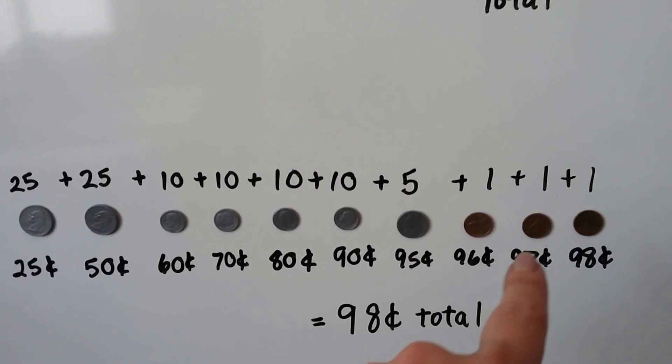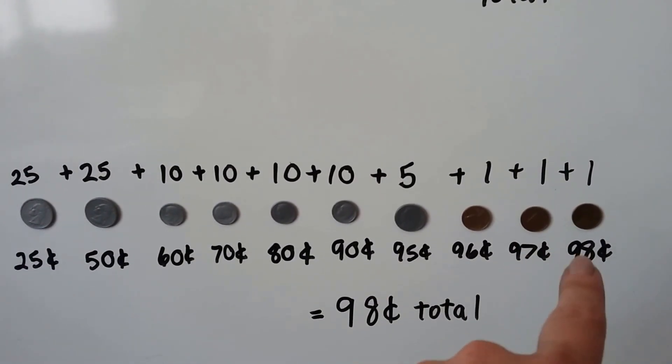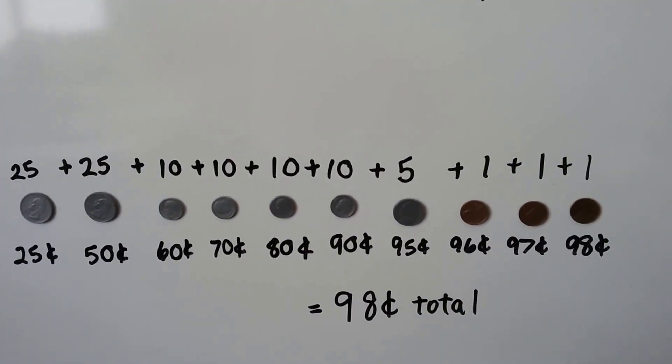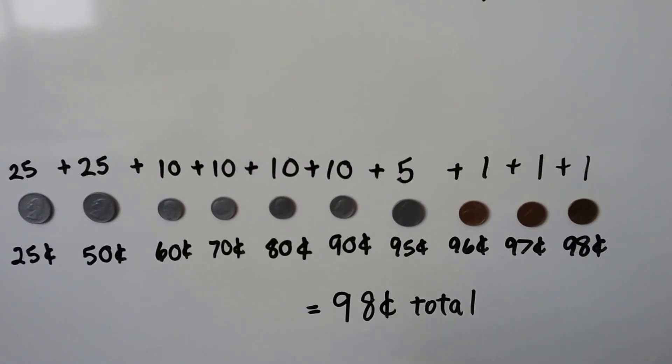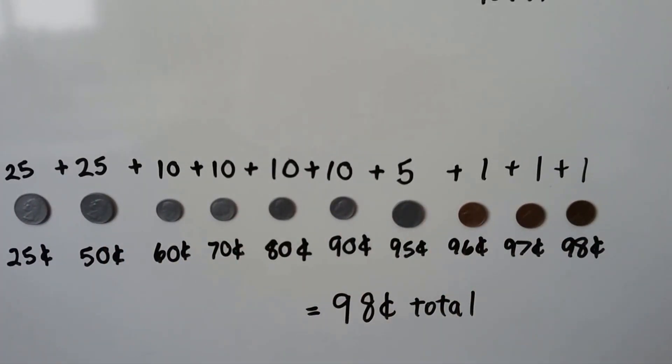We add one. We're at 96. We add one. We're at 97. We add one. We're at 98. We have 98 cents total. Out of all these coins, we have 98 cents.